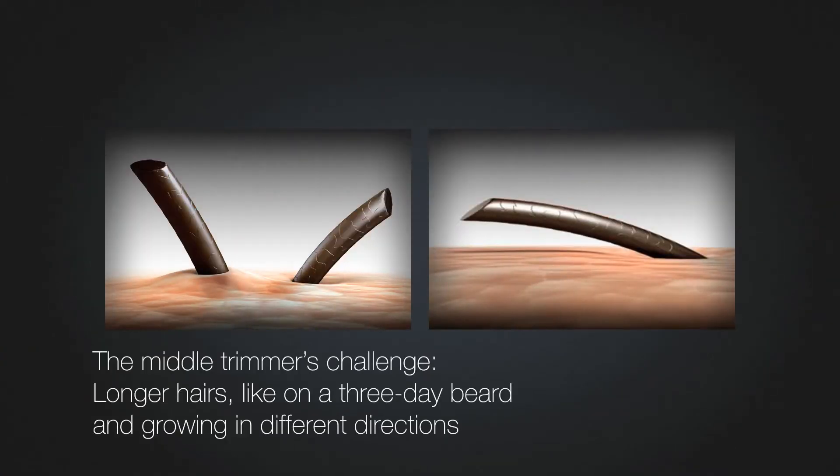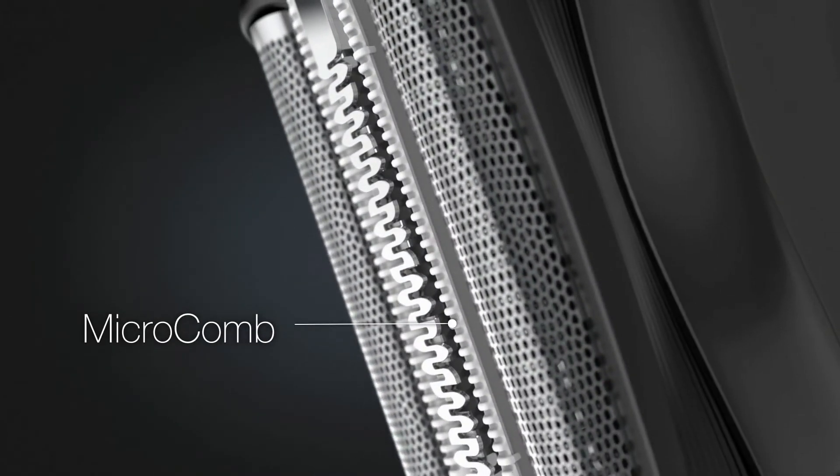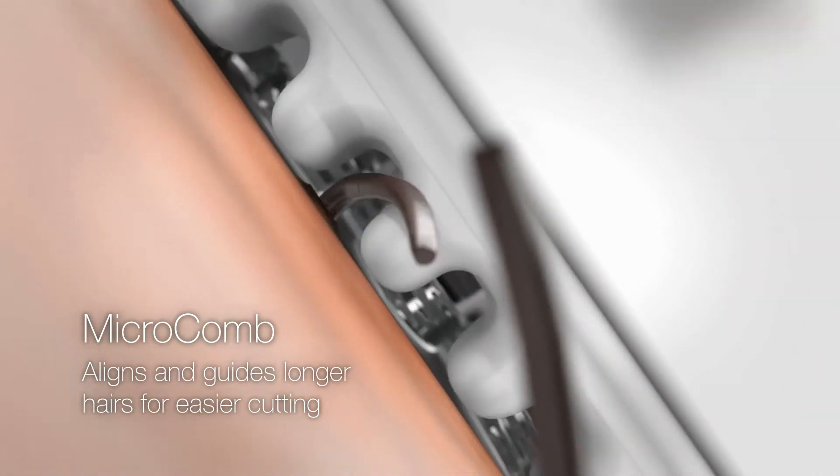Longer hairs like on a three-day beard and growing in different directions are difficult for the middle trimmer to catch. The new Braun Series 3's microcomb around the middle trimmer guides these longer hairs into the middle trimmer so it can capture and trim them more easily.